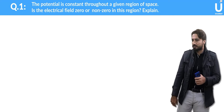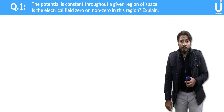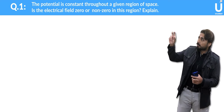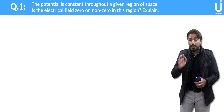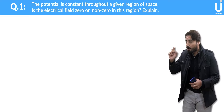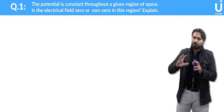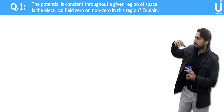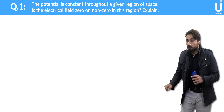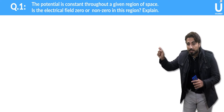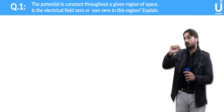The first short question 12.1 is on the screen: 'Potential is constant throughout a given region of space.' Is the electric field E zero or non-zero in that region? In other words, if the potential value is constant, will the electric field be zero or non-zero?